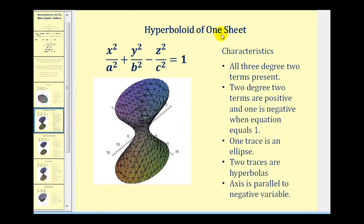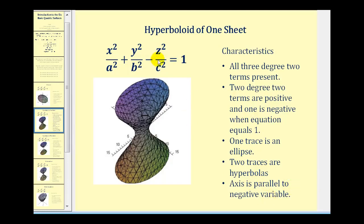Now let's take a look at the hyperboloid of one sheet. Here is the equation in the most general sense. Notice all three degree two terms are present. However, two of the degree two terms are positive, as we see here for the x squared and y squared terms, but one of the squared terms is negative, as we see here for the z squared term. It doesn't always have to be the z squared term that's negative, but two are positive and one is negative. For a hyperboloid of one sheet, one of the traces will be an ellipse, two of the traces will be hyperbolas, and the axis is parallel to the negative variable. Here we see a negative z squared term and the axis is parallel to the z axis.